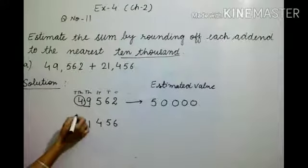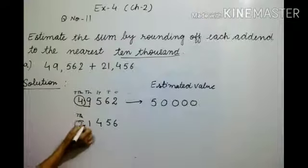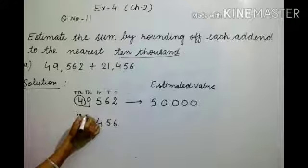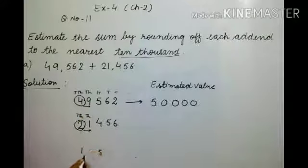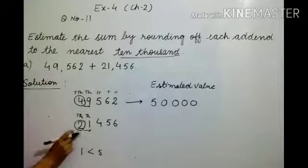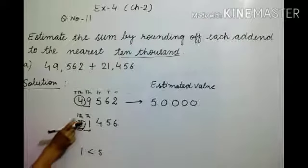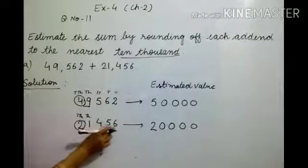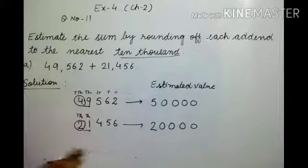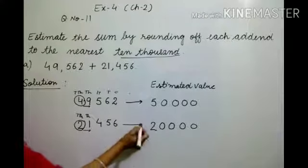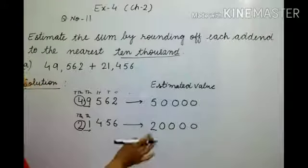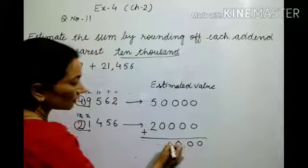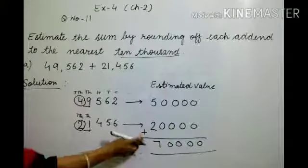For 21,456, identify the ten-thousands place digit, which is two. Circle it. The digit to the right of two is one, which is at the thousands place. Compare one with five — one is less than five, so no change. The circled digit two remains the same, and the remaining four digits — one, four, five, six — all turn to zero. So 21,456 is rounded to 20,000 to the nearest ten thousand. Now add the estimated values: 50,000 plus 20,000 equals 70,000. That is our answer.